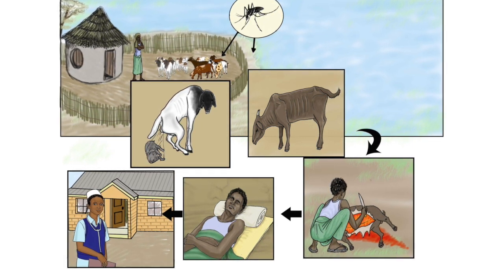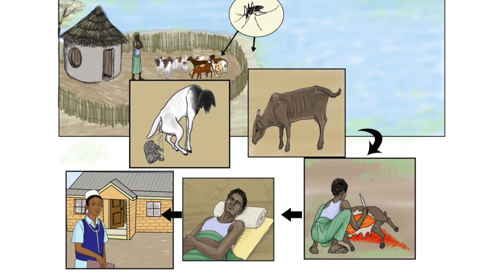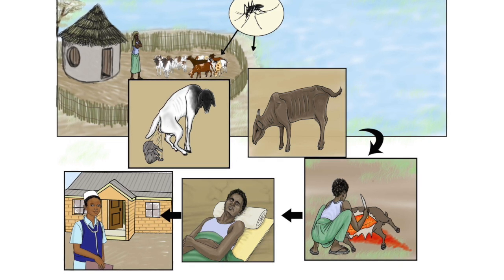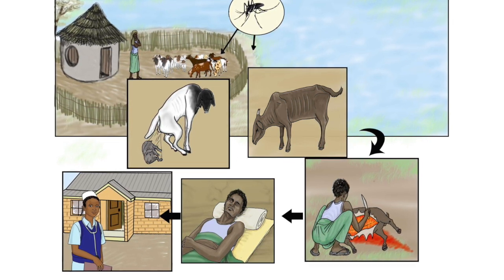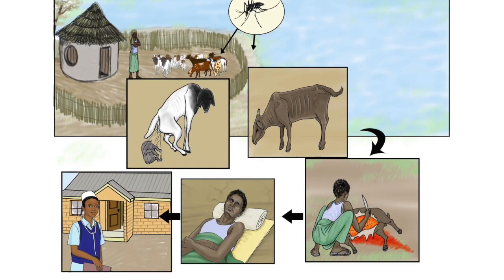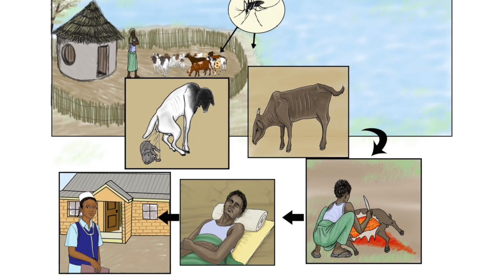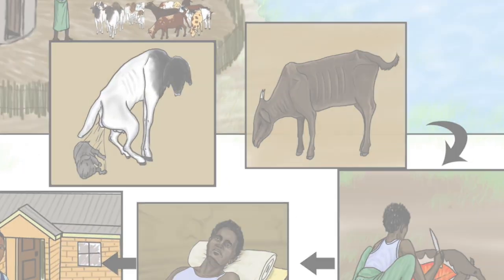It also affects humans, leading to transient fever in a majority of cases, but in a few cases, the infection can escalate to a severe disease, characterized by extensive bleeding and death.